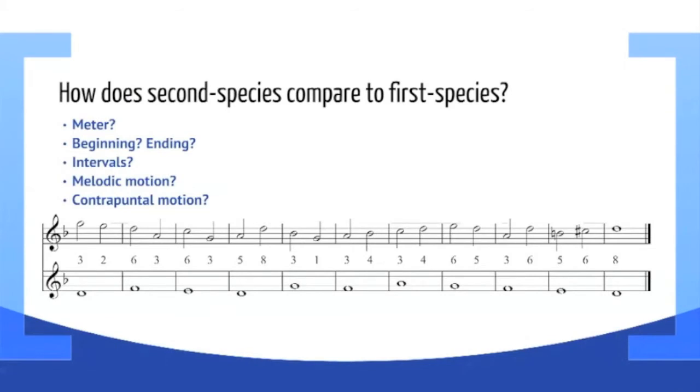So the question I would ask you is this: how does second species counterpoint compare to first species counterpoint? The most obvious difference is that now we have half notes in the counterpoint against the whole notes in the cantus firmus, but you may have noticed other things.